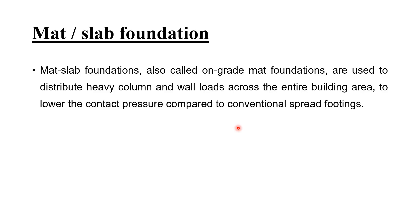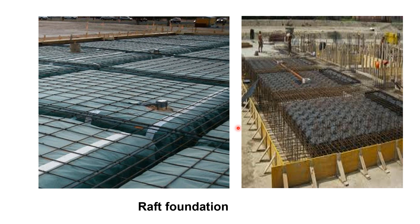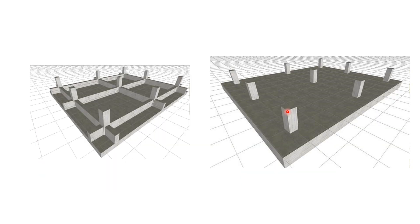In a raft or mat foundation, all the footings under the columns are combined into one slab at the bottom. We can also provide beams in the ground — for example, if one column is facing more settlement, we stiffen that portion by connecting beams so that all structural members connected to that foundation try to resist the downward movement of that column.